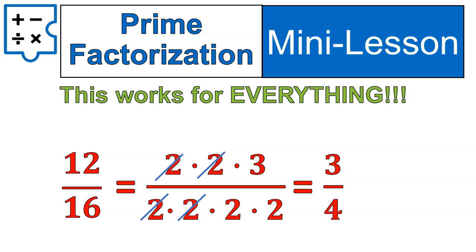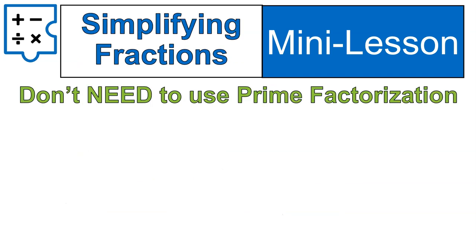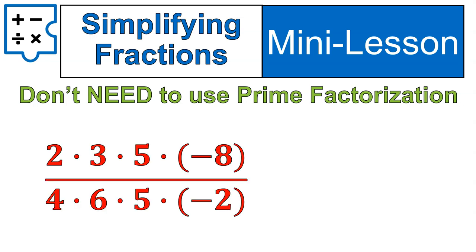It really can be simple, especially if you like doing prime factorization. Then you wouldn't have to worry about necessarily finding our greatest common factor all the time. Now, you don't need to use prime factorization, and that's the other thing. You actually don't need to simplify them all out, and I'll show you that in this example here.